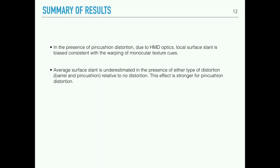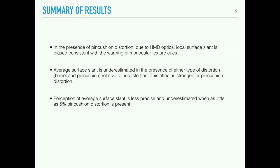To summarize: pincushion distortion due to HMD optics causes local surface slant to appear biased in a way consistent with apparent concave surface curvature, induced by the warping of monocular texture cues. Average surface slant is underestimated in the presence of either barrel or pincushion distortion relative to the non-distorted condition, with this effect stronger for pincushion than barrel distortion. Perception of average surface slant is less precise and underestimated when as little as 5% pincushion distortion is present, but there are no measurable effects at 1% distortion for either type.